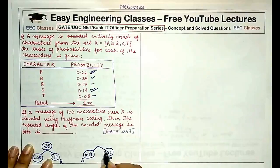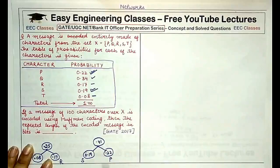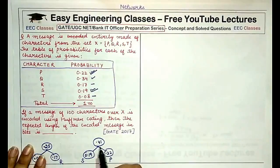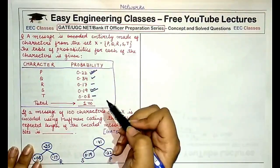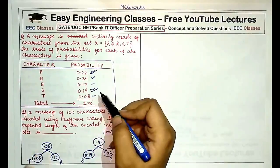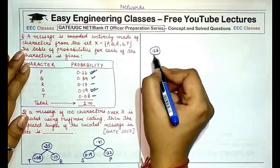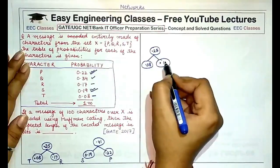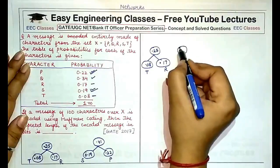So in the next step we combine 0.19, that means S, and 0.22 which is P, to form another combination which gives us the sum of 0.41. Now our comparison would be between 0.25, 0.41, and 0.34. Out of these we would combine 0.25 and 0.34.